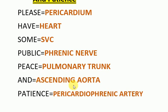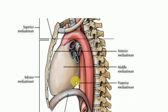The arch of aorta is present in the superior mediastinum, the ascending aorta is present in the middle mediastinum, while the descending aorta is present in the posterior mediastinum. The other two main structures — the heart and the pericardium — are present in the middle mediastinum. This image shows the heart in the middle mediastinum, the superior mediastinum containing the arch of aorta, and the ascending aorta in the middle mediastinum.